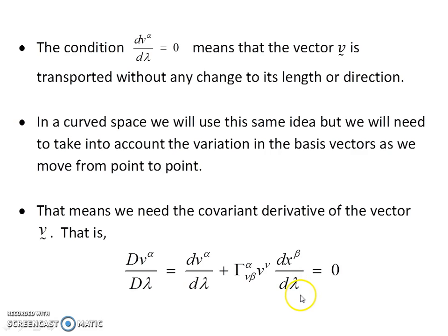Given that we're interested in what happens along a curve, then we're after the intrinsic or absolute derivative. And these are the components of the intrinsic or absolute derivative, and we want to set them to zero so the vector is parallel transported along the curve.